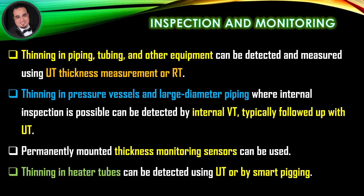Inspection and monitoring: Thinning in piping, tubing, and other equipment can be detected and measured using UT thickness measurement or RT. Thinning in pressure vessels and large-diameter piping where internal inspection is possible can be detected by internal VT, typically followed up with UT. Permanently mounted thickness monitoring sensors can be used. Thinning in heater tubes can be detected using UT or by smart pigging.